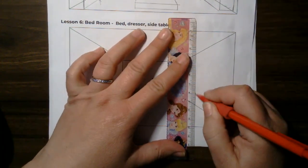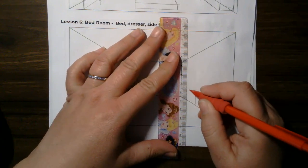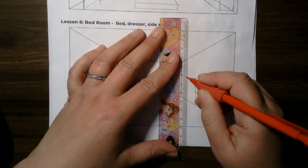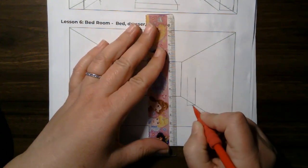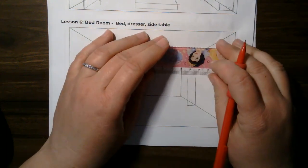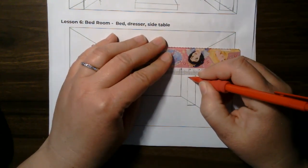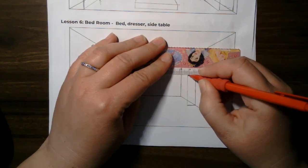So first thing we want to do is we're going to draw, you know what, let's make this the larger dresser. Make this a little bit high, there we go. So we're going to start off with a tall dresser.